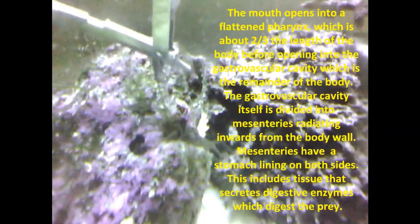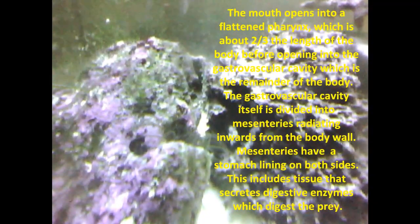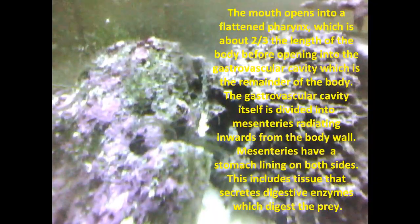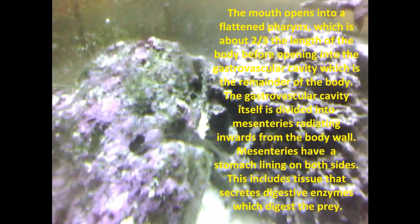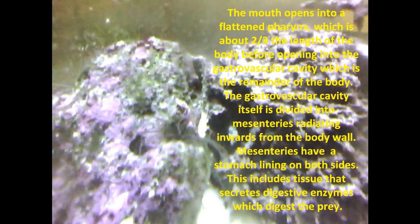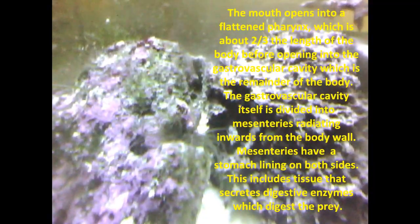The mouth opens into a flattened pharynx, which is about two-thirds the length of the body before opening into the gastrovascular cavity, which is the remainder of the body. The gastrovascular cavity itself is divided by mesenteries radiating inwards from the body wall. Mesenteries have a stomach lining on both sides, including tissue that secretes digestive enzymes which digest the prey.